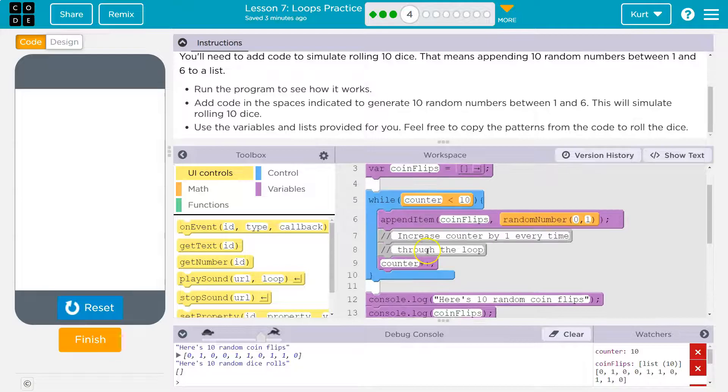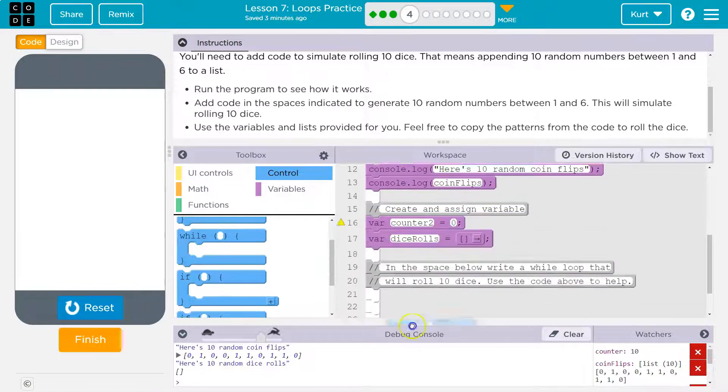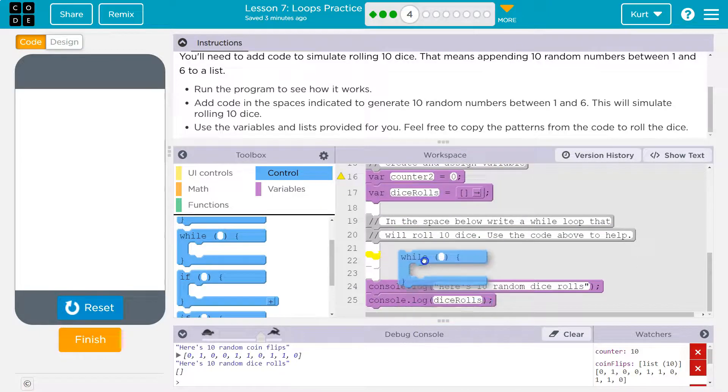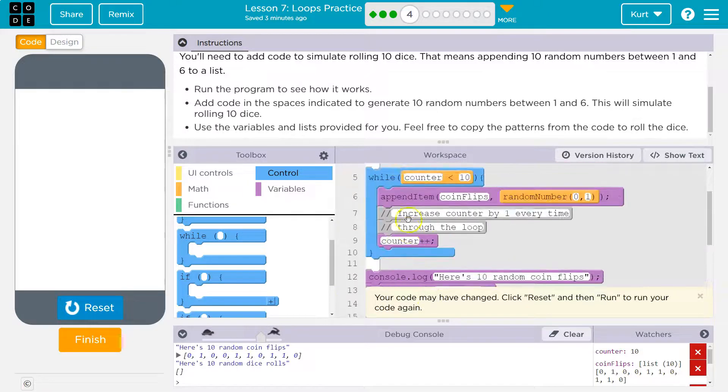All right, so they gave us this list dice rolls. We're going to need a loop, a while loop. And I'm going to put it down here where it says yes. Right there is where I'm going to put it.